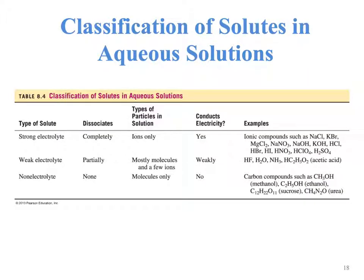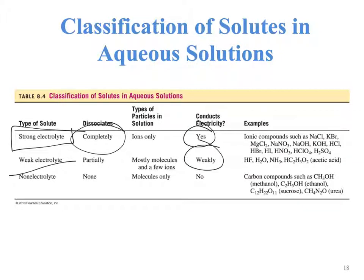So the classifications are: strong electrolytes, which dissociate completely and conduct electricity; weak electrolytes, which dissociate partially and conduct electricity weakly; and non-electrolytes, which do not dissociate and do not conduct electricity.